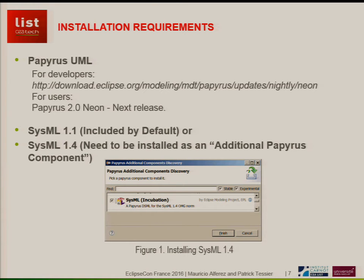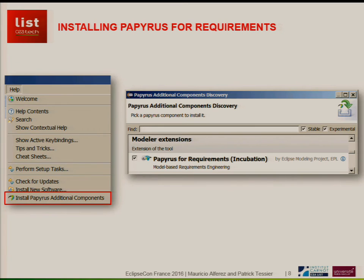The base of Papyrus for Requirements is obviously Papyrus UML. We can install it in the Neon release of Papyrus — it is coming — but we also have one working version in our nightly build site. You can also install SysML; the latest version is 1.4. Everything is ready. To install Papyrus for Requirements, you can click on install Papyrus additional components in your Eclipse installation and everything will be installed very nicely and fast.